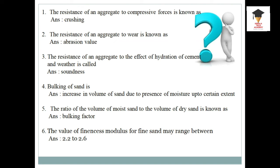What is bulking of sand? It is the increase in volume of sand due to the presence of moisture up to a certain extent. The ratio of volume of moist sand to the volume of dry sand is known as the bulking factor. The value of fineness modulus for fine sand may be in the range between 2.2 to 2.6. It has no unit.